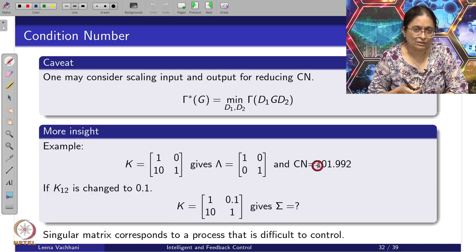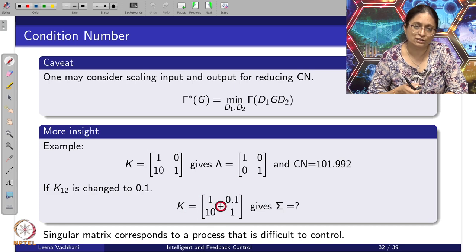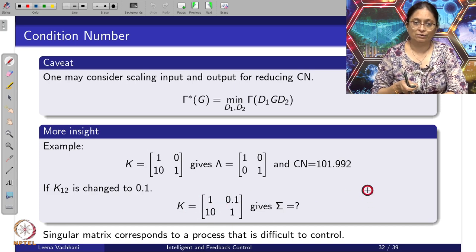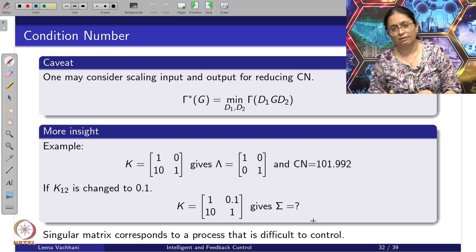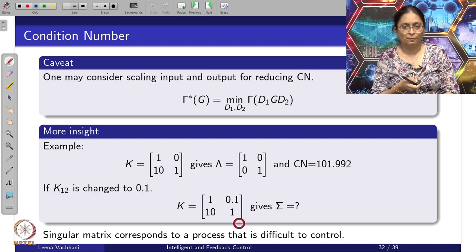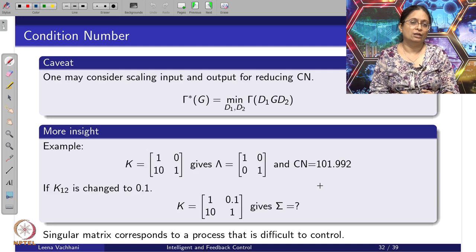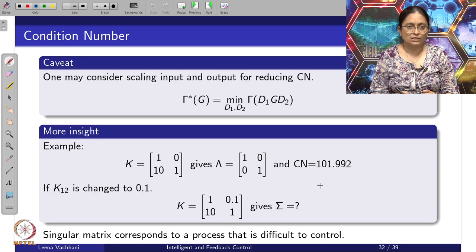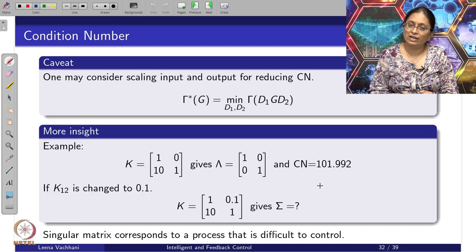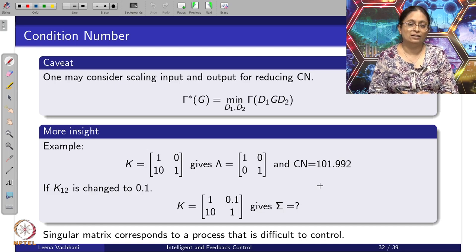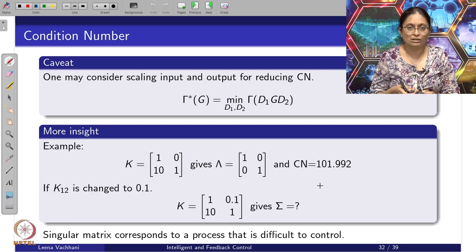If I change k_12 by just a 10% increase to 0.1, the corresponding gain matrix becomes singular. This corresponds to systems that are difficult to control because as soon as the gain matrix is nearly singular, the condition number loses significance — the rank is being lost. In such cases, variable pairing is not a good idea and one should resort to the single-loop MIMO case.